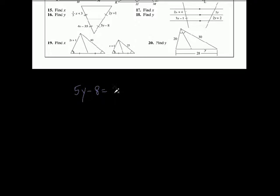Let's keep rolling. Problems 15 and 16 go together. You've got a triangle with one segment equal to another. Let's do y first since it's easier. These segments are equal, so set them equal: 5y minus 8 equals 2y plus 1. Subtract 2y from both sides to get 3y; add 8 to get 9. Divide by 3 and y equals 3.